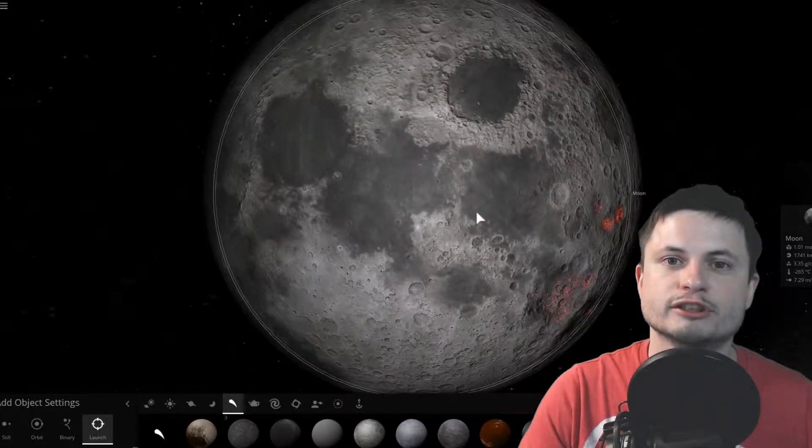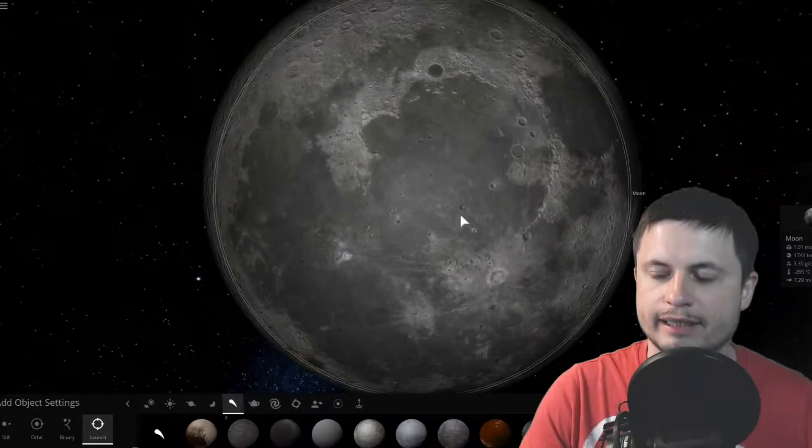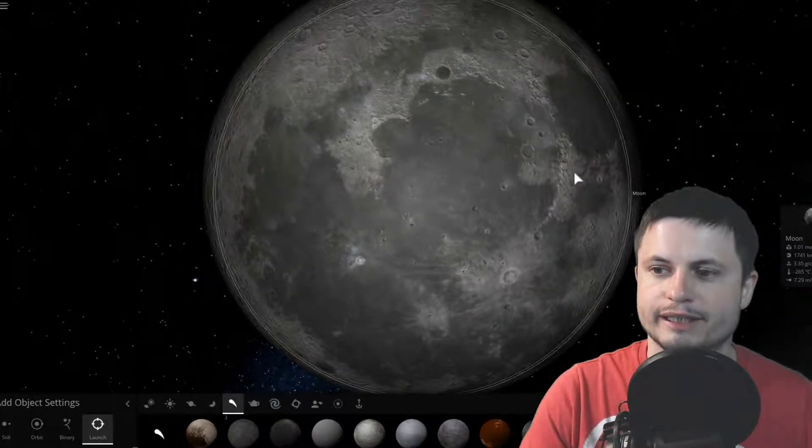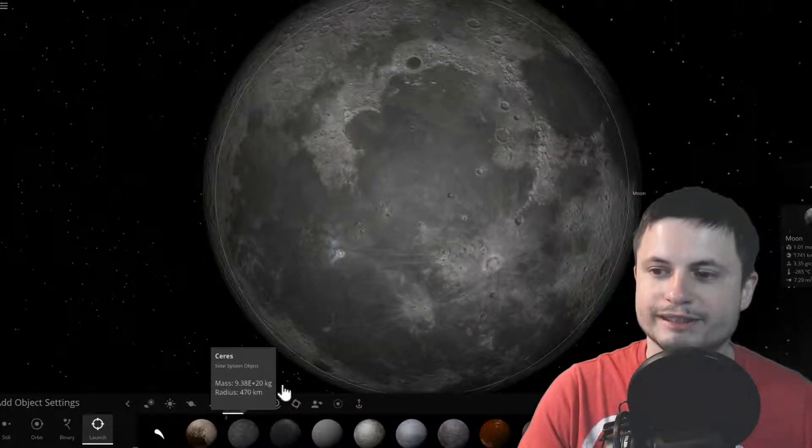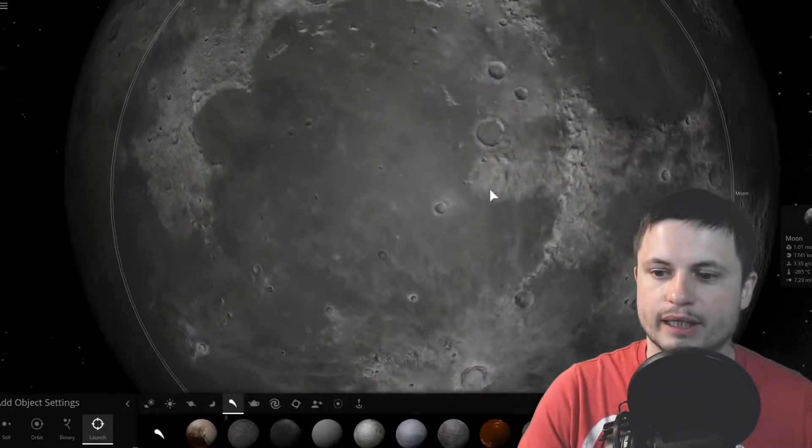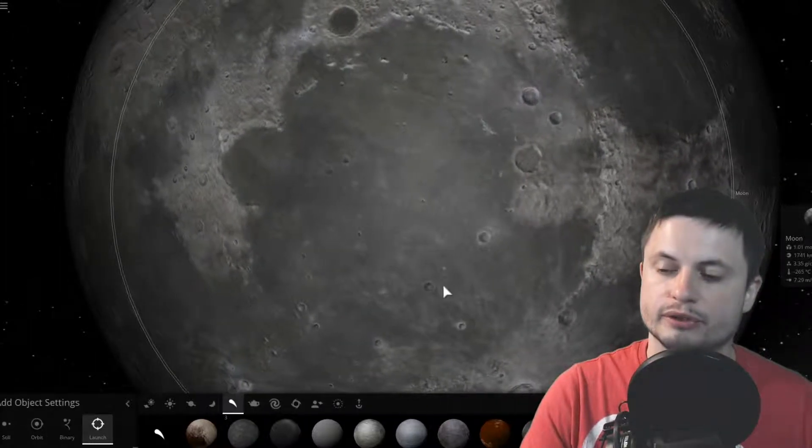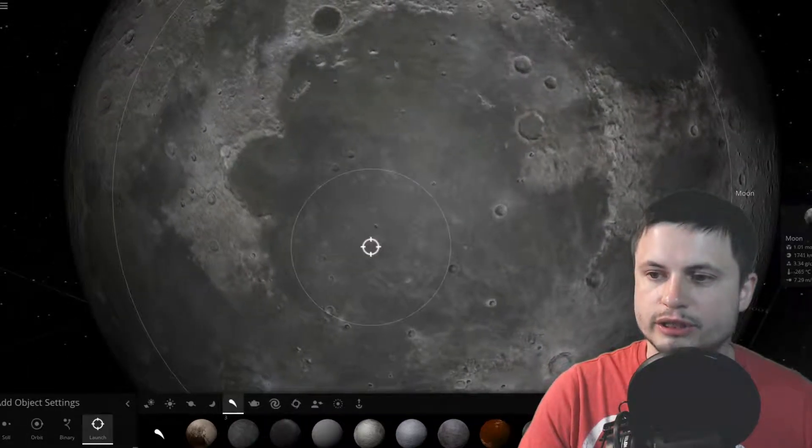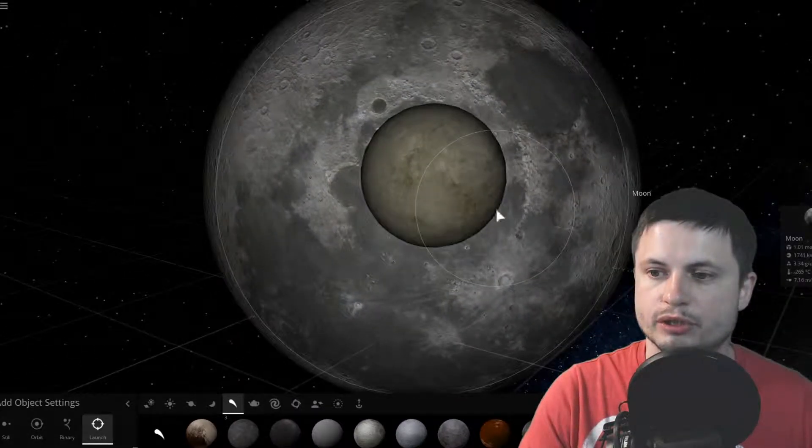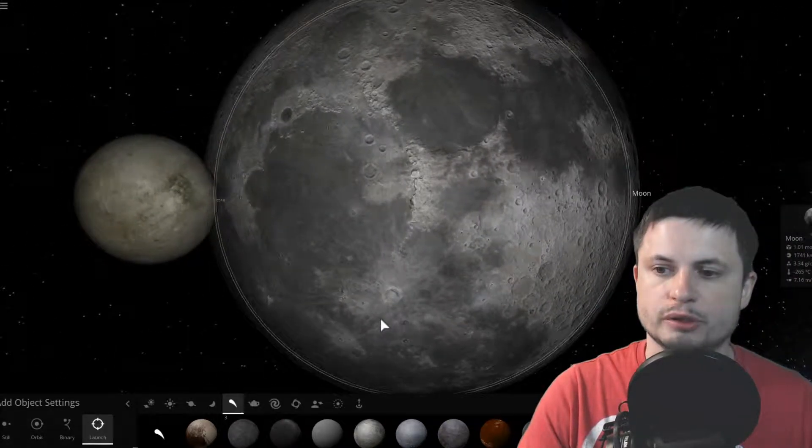Now the second largest crater on the moon is actually visible from earth and it's this right here. This is known as the Imbrium crater and it also was a result of a somewhat similar collision and possibly happened only a few hundred million years after the first collision. Now quite a lot of various missions actually happened in this particular region of the moon including Chang'e 3 actually and also several Apollo and Luna missions.